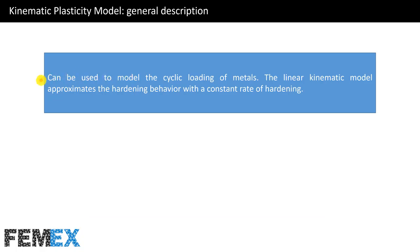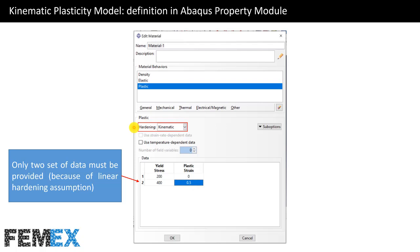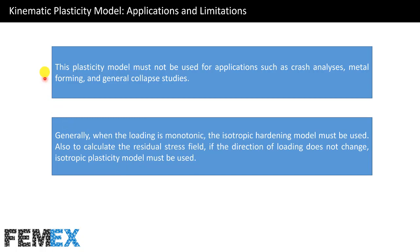The kinematic plasticity model can be used to model the cyclic loading of metals. The linear kinematic model approximates the hardening behavior with a constant rate of hardening. In this picture, hardening is kinematic and only two sets of data are provided because of the linear hardening assumption. The kinematic plastic model must not be used for applications such as crash analysis, metal forming, and general collapse studies. Generally, when the loading is monotonic, the isotropic hardening model must be used. Also, to calculate the residual stress field, if the direction of loading does not change, the isotropic plasticity model must be used.